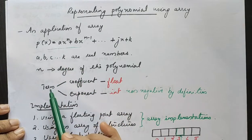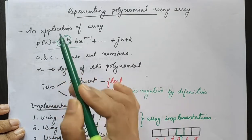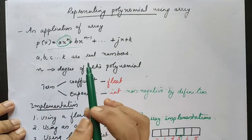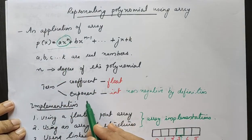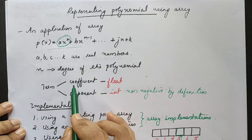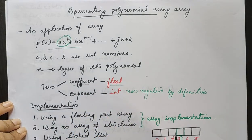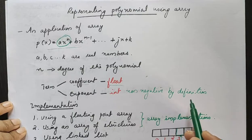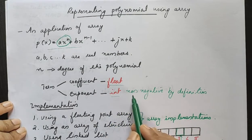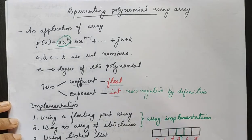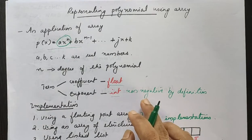A polynomial term is one term: A times x raised to n. It has a coefficient and an exponent. A is the coefficient and n is the exponent. The coefficient is a real number data type, and the exponent, as per definition, should be a non-negative integer.